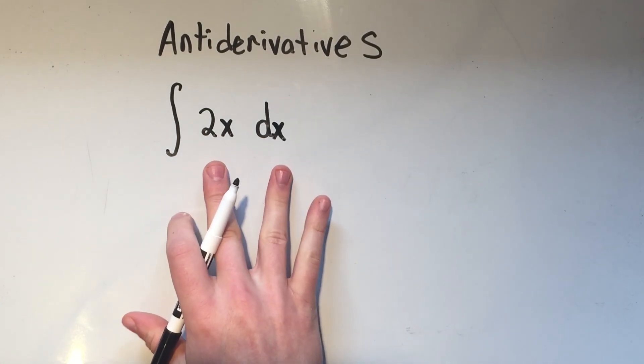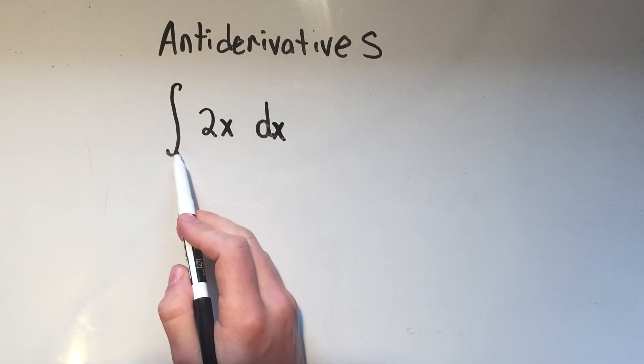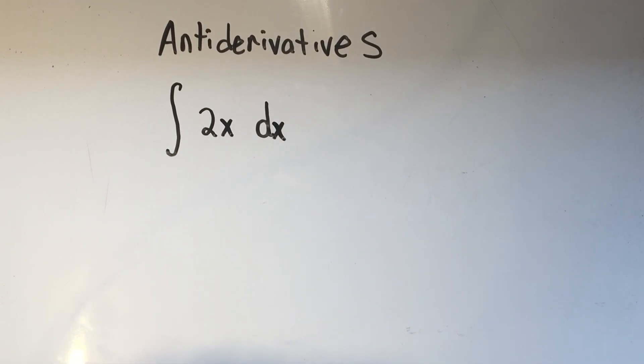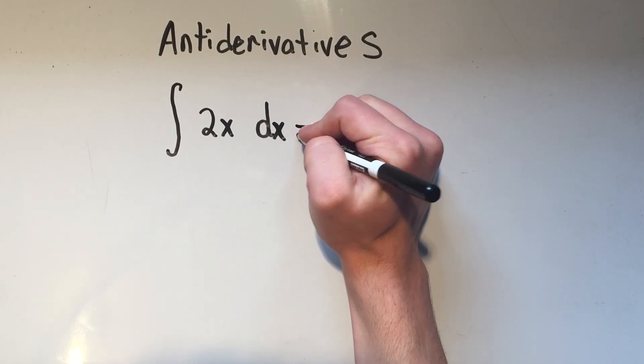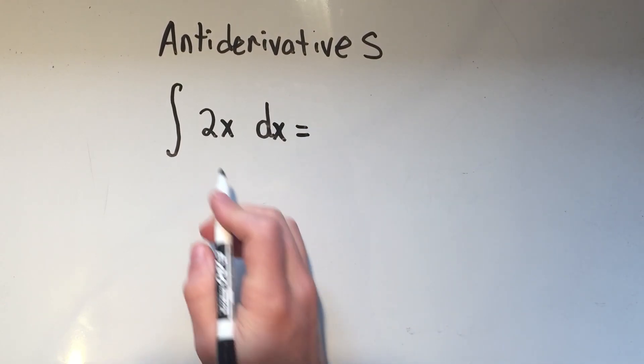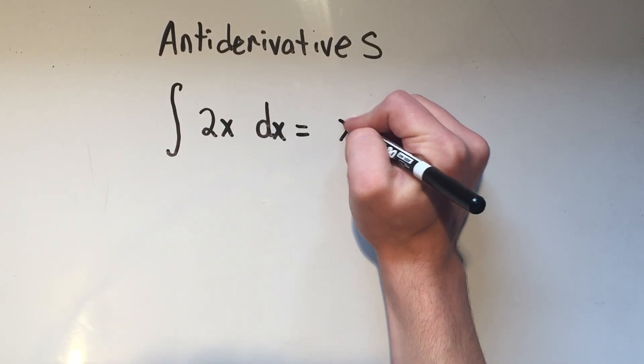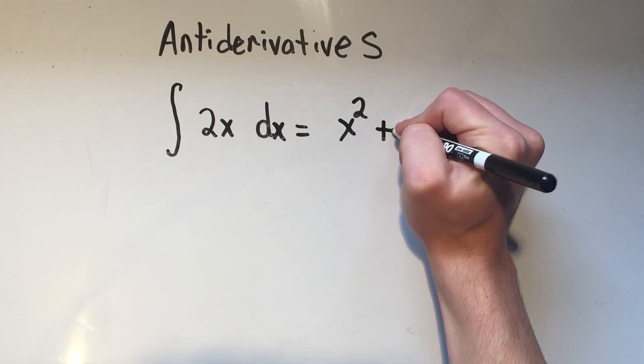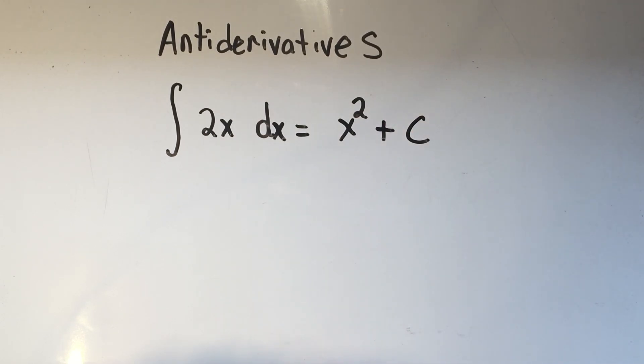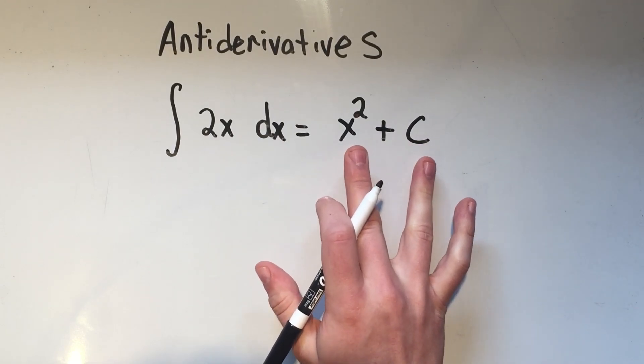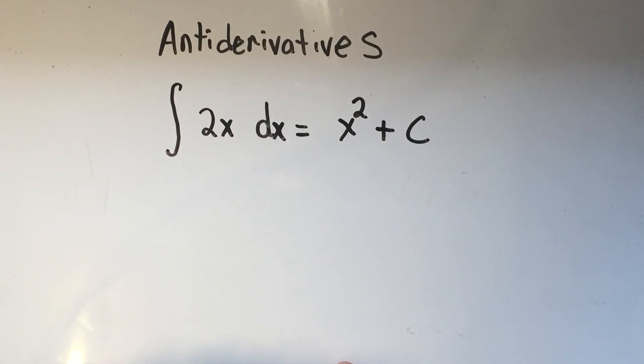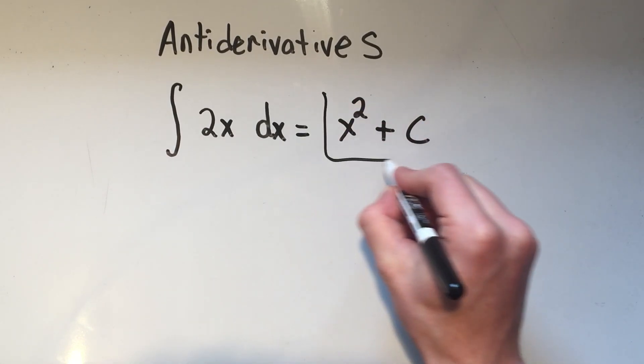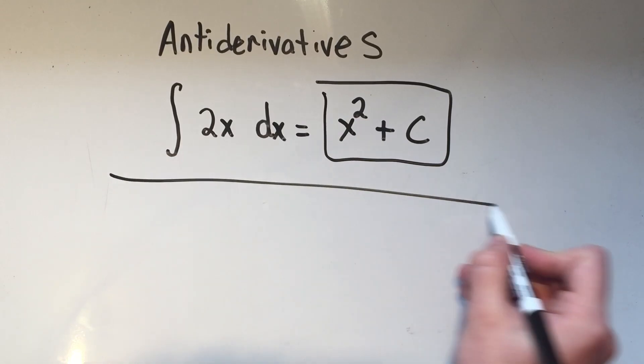But for now, this is the problem. This says take the anti-derivative of 2x. We know that the anti-derivative of 2x is x squared. And I need to add plus c, because if I took the derivative of this thing, the constant would go to zero anyway. And this would be the answer. So this whole thing might be a problem on one of your tests.